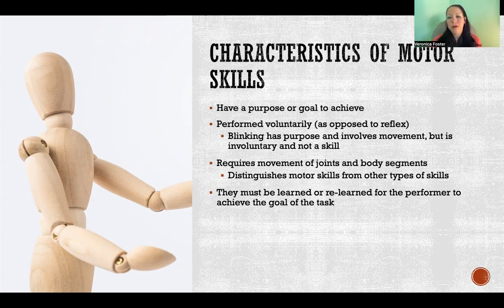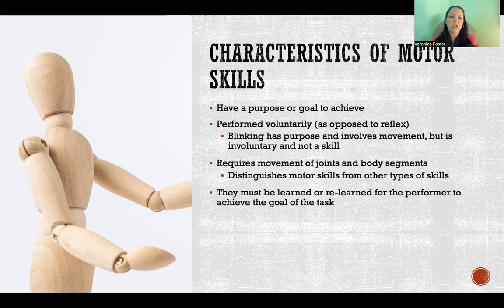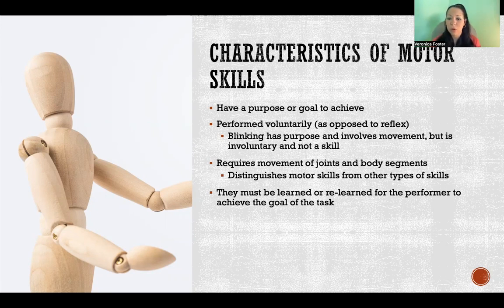A motor skill must also be performed voluntarily, as opposed to involuntarily or reflexively. For example, blinking has a purpose — to protect the eyes and keep them lubricated — and it involves movement, but it's involuntary. It's not something we have to learn or can improve in, so it doesn't qualify as a skill.